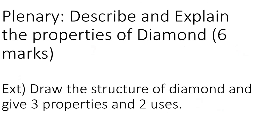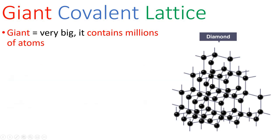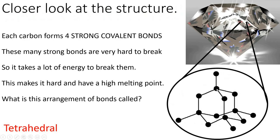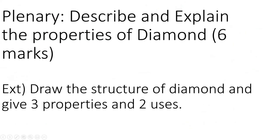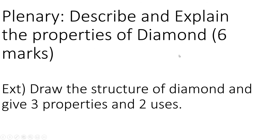For the extension: draw the structure of diamond - it's going to look like this, or we can simplify it slightly, just as long as we're showing that each carbon is bonded to four other carbon atoms. Three properties: hard, high melting point, and lustrous. Two uses of diamond are in jewellery and as cutting tools. You've done a fantastic job, and that's the end of this lesson.